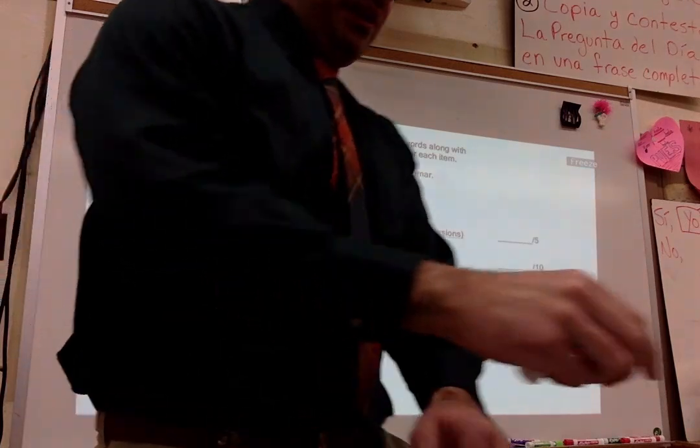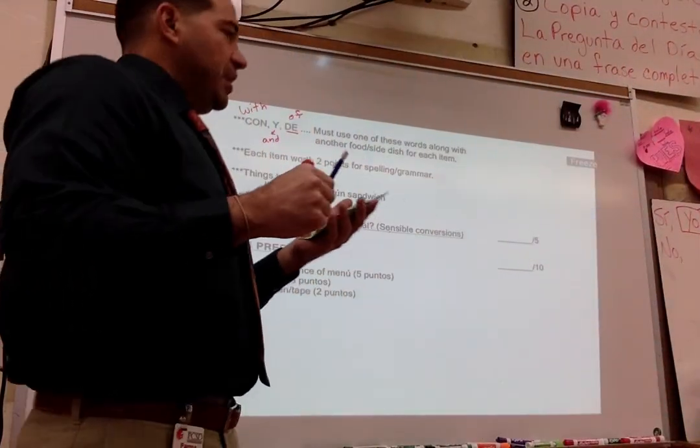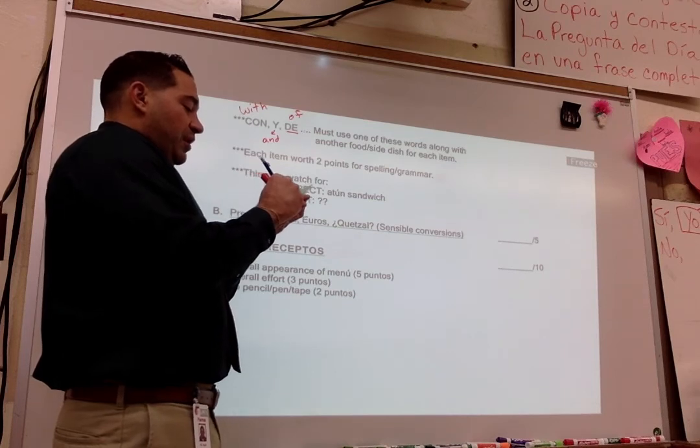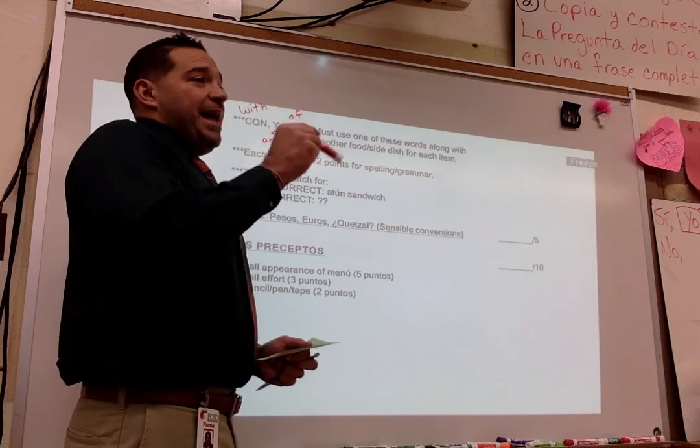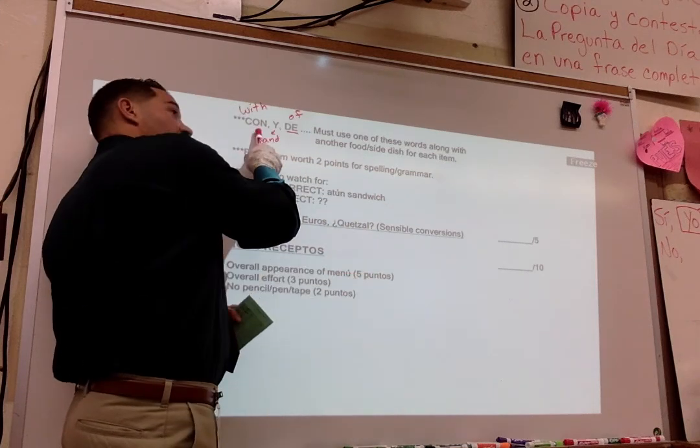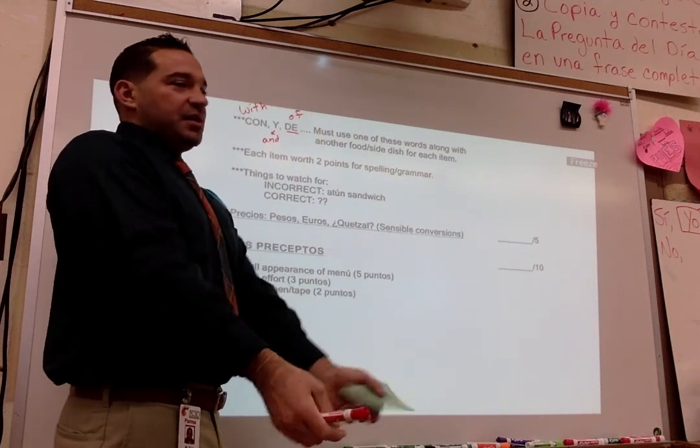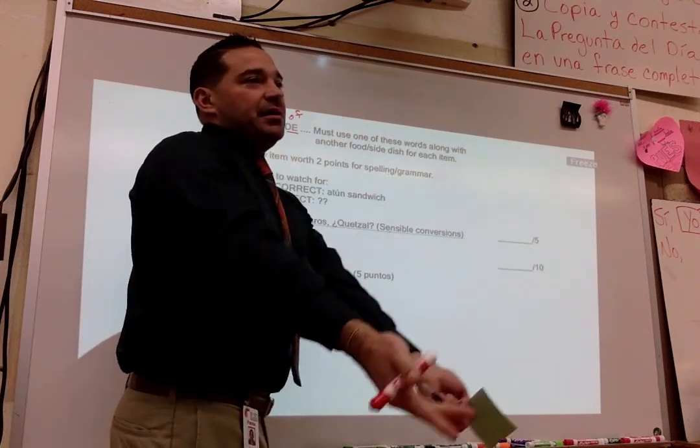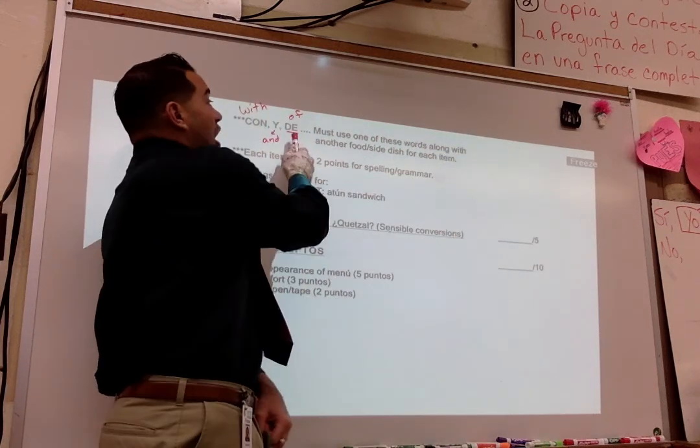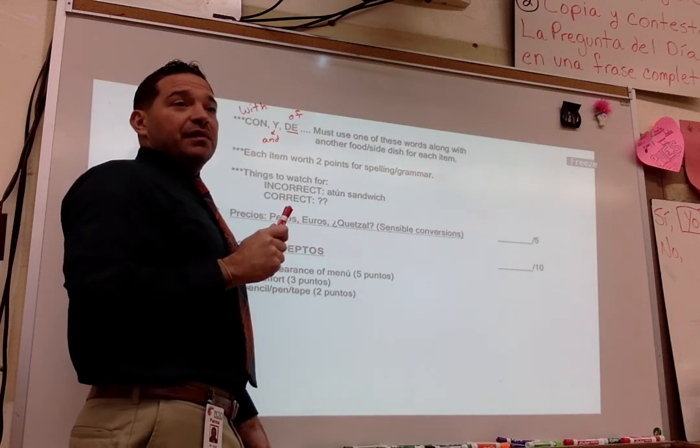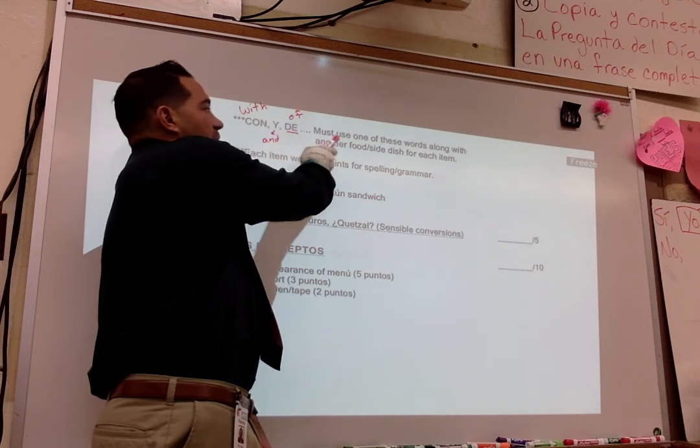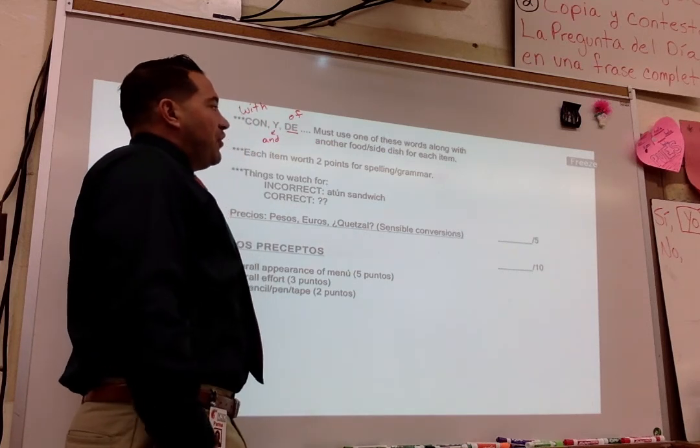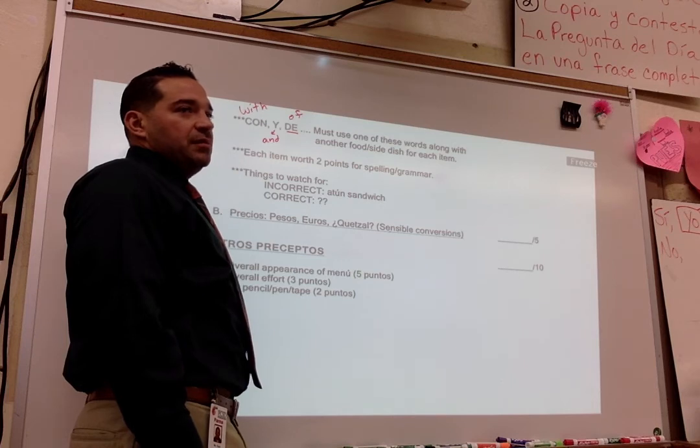So you need those words in the description of your food. So you say, okay, for breakfast, pancakes. You don't just write pancakes. Pancakes with something else, pancakes and something else, pancakes of blueberries. So you can do any one as long as you're using one of these. Must use one of these words along with another food or side dish for each item.